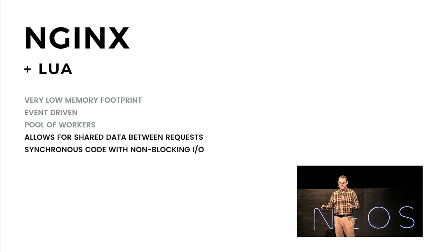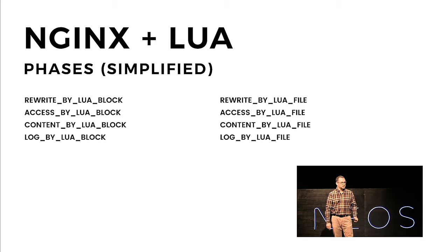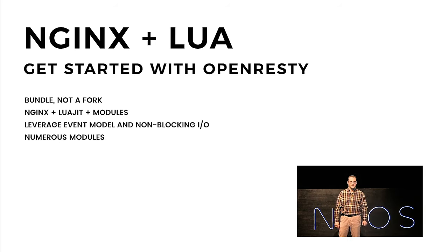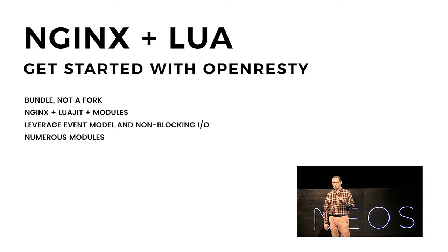It does not mean that data is leaking all the time — there is no global namespace that you should be afraid of. You have to specify specifically a dictionary and say yes, this is going to be shared between our workers. And you have non-blocking IO. If you want to get started with Nginx and Lua, I suggest you look into OpenResty. OpenResty is a bundle — not a fork of Nginx. It contains Nginx, LuaJIT, and a couple of modules. It leverages the event model and non-blocking IO, so all those modules for Memcache, MySQL, Redis, WebSockets are going to be non-blocking.